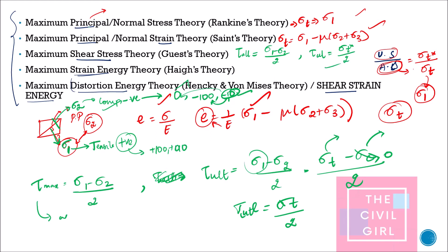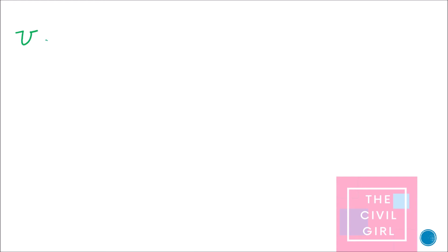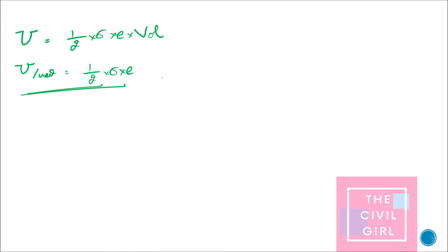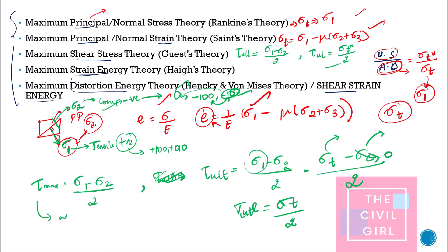Next is maximum strain energy theory. Strain energy U = (1/2) × stress × strain × volume. Per unit volume it becomes (1/2) × stress × strain. The key formula to remember is: sigma_t² = sigma_1² + sigma_2² − 2ν·sigma_1·sigma_2.